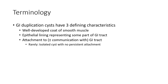Terminology: GI duplication cysts have three defining characteristics. First, a well-developed coat of smooth muscle. Second, an epithelial lining representing some part of the GI tract. Third, attachment to the GI tract — though rarely, isolated cysts with no persistent attachment can occur.